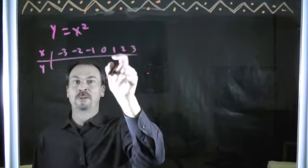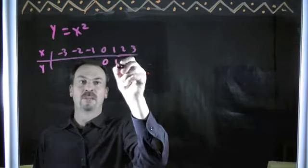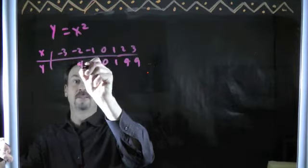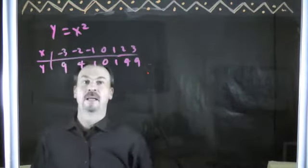But you know, put x equals 0, 0 squared is 0. Put in 1, 1 squared is 1. Put in 2 is 4, 9. Negative 1 squared is 1 again. Negative 2 squared is 4. Negative 3 squared is 9.